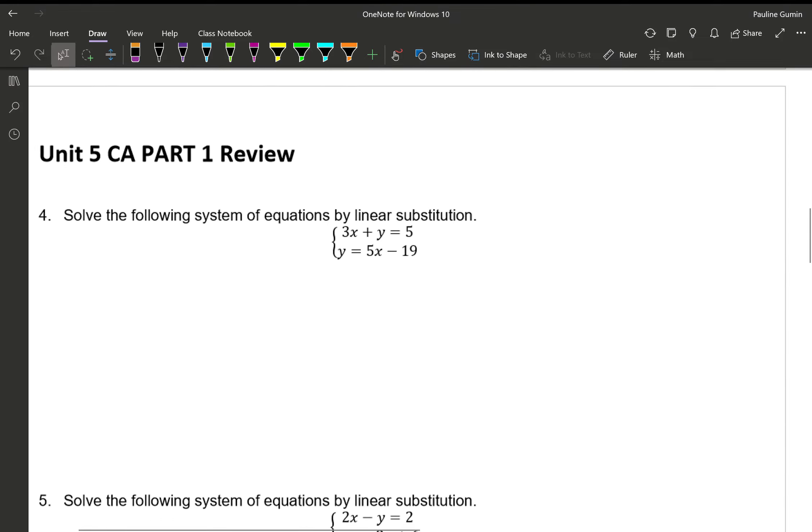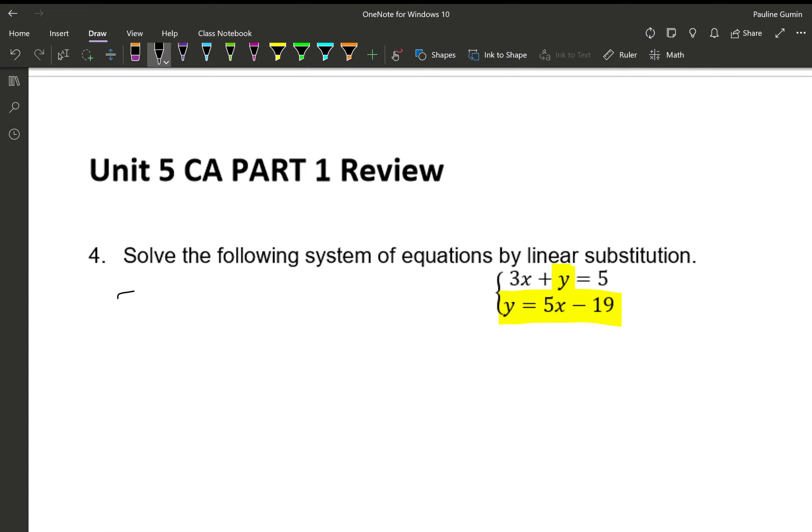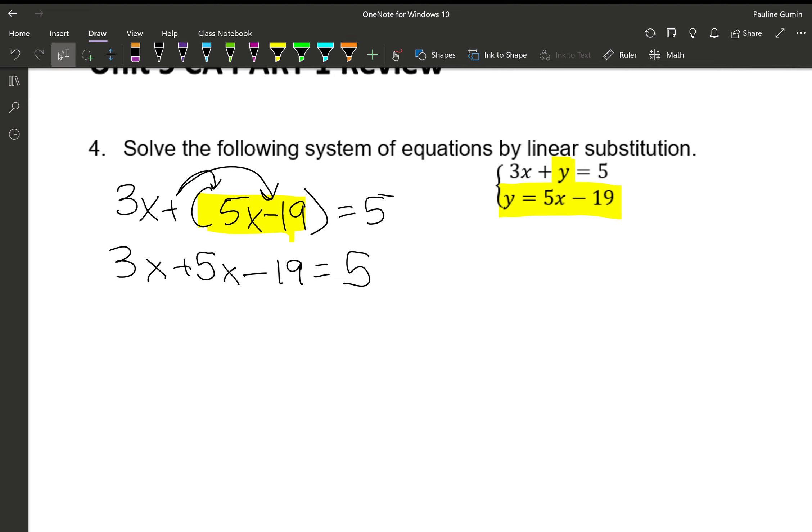Number 4 asks us to solve this by substitution. So one of our equations, X and Y, are on the same side. The other one is a Y equals. That tells me that I'm going to take this Y equals and substitute into the top equation. So instead of 3X plus Y, I'm going to have 3X plus 5X minus 19 equals 5. Now, I do technically have an invisible 1 in front of these parentheses, so I'm kind of going to distribute that. 1 times 5X is 5X. 1 times negative 19 is negative 19 equals 5. Next, let's combine some like terms. I'm going to combine the X's. 3X's plus 5X's give us 8X's.